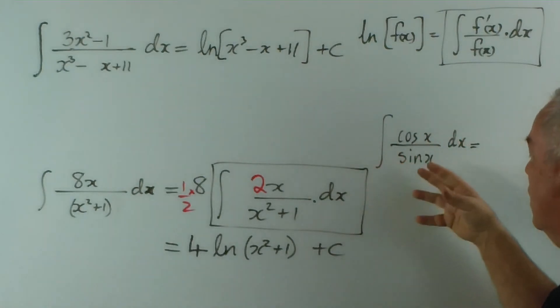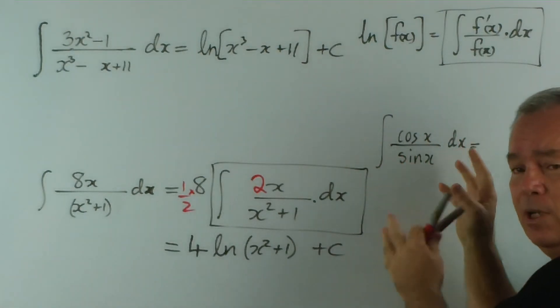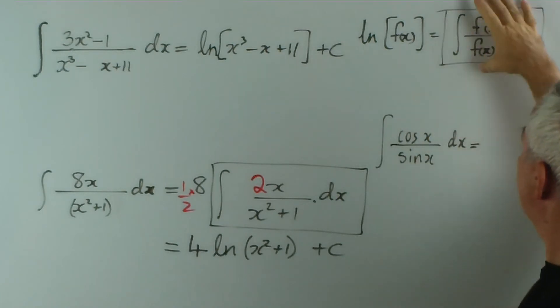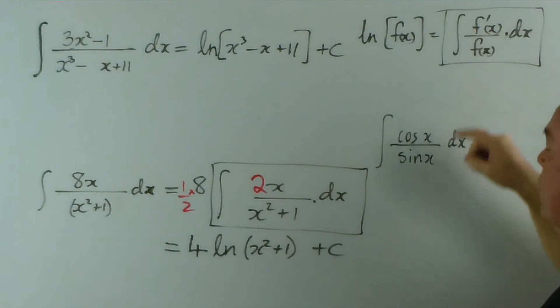So you can sometimes get a function like this: integrate cos x / sin x dx. Now, at first thought, you might think this is more of a trigonometric issue. But when you realize that the derivative of sin x is cos x, you realize that this follows this exact pattern, where the function on the top is the derivative of the function on the bottom. And in that case, our result is the logarithm of the function on the bottom, ln(sin x) plus c.